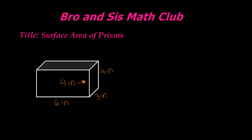So to begin with, what exactly is surface area? Well, surface area is the total area of a 3D object, in which you find the separate areas of the 2D objects in the 3D object, and then you add all of them together to find the total area, which is the surface area.